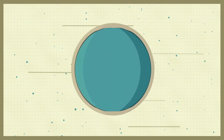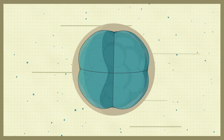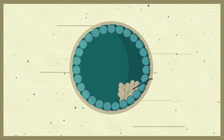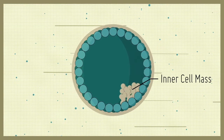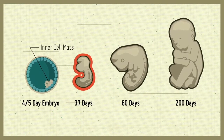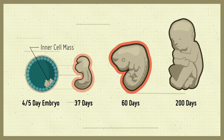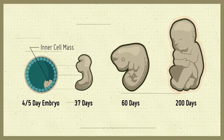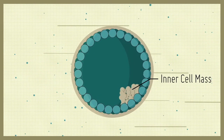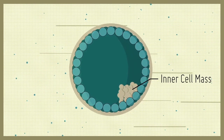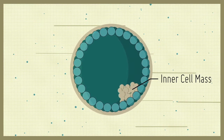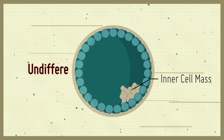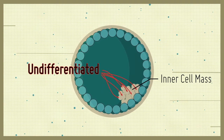Following fertilization, the developing embryo contains a group of cells known as the inner cell mass that will eventually go on to form all tissues of the body. However, at this early stage of development, these cells have not yet committed to become a specific type of cell and are said to be in an undifferentiated state.